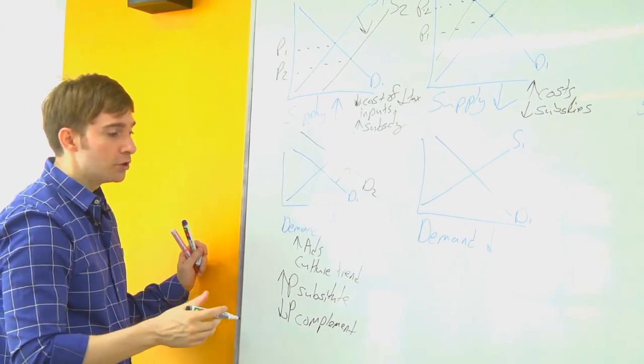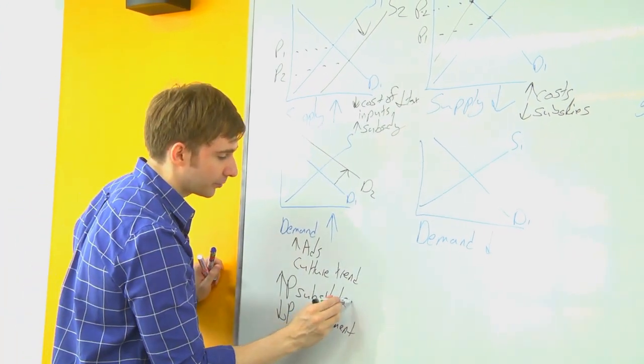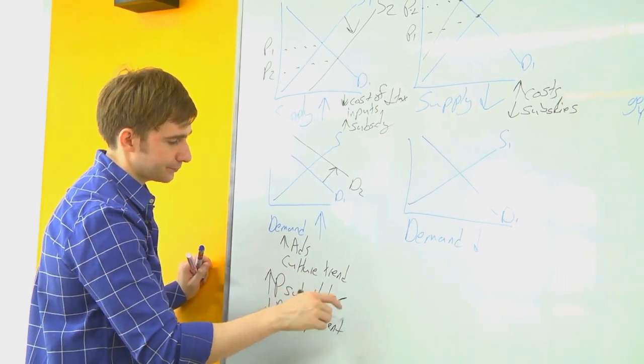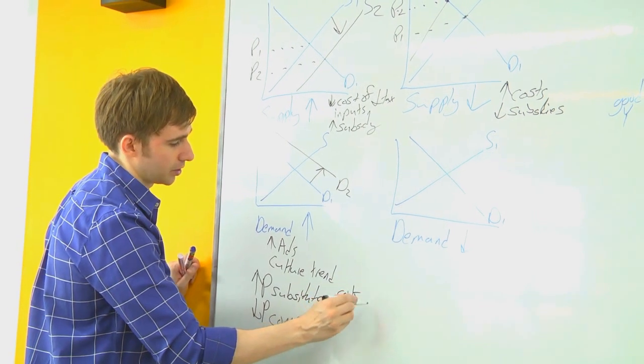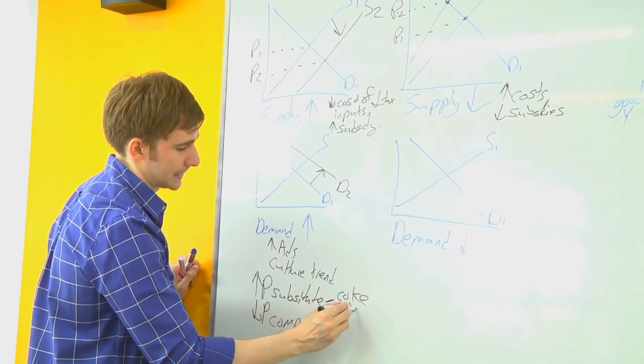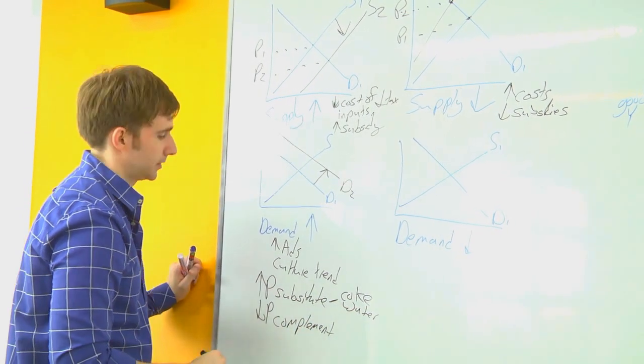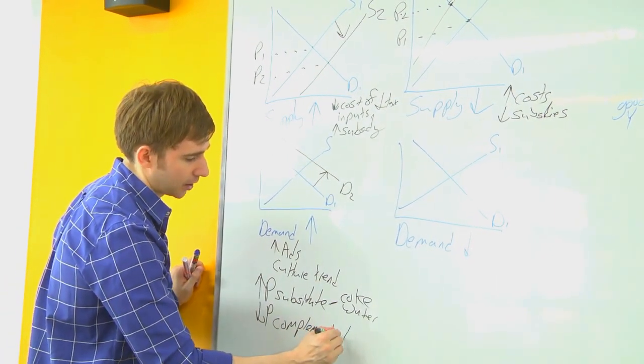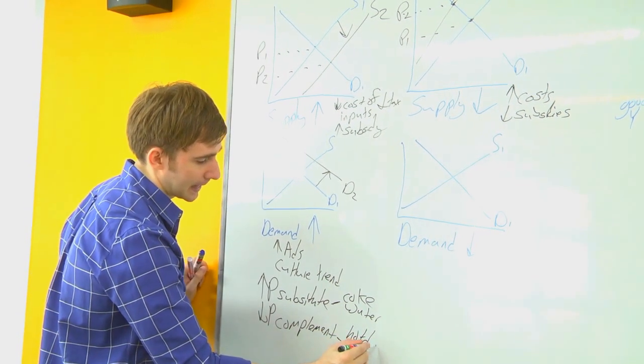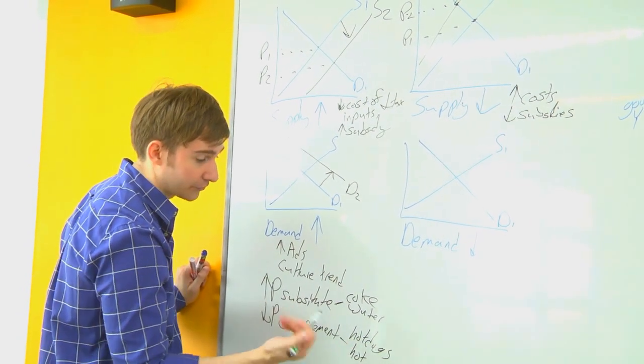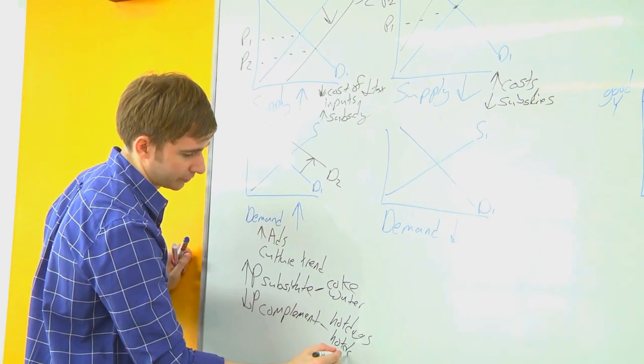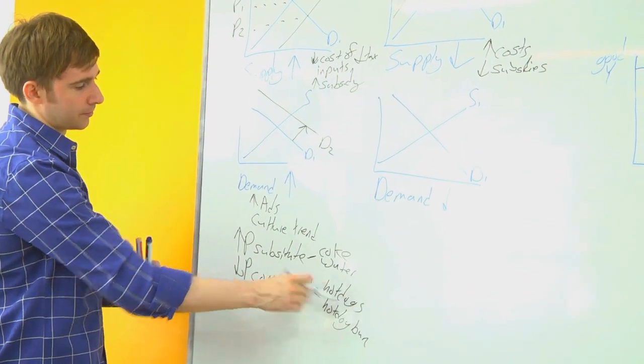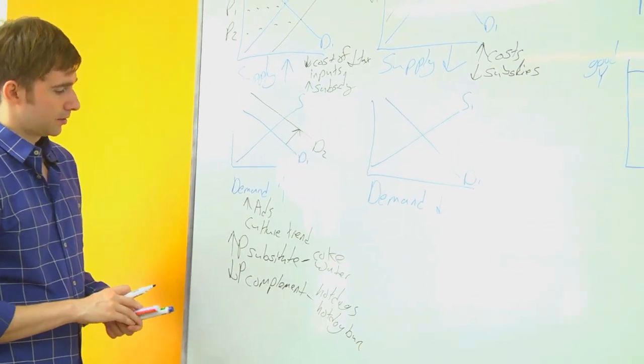So just a quick review. An example of a substitute might be Coke and water. Complements are two things you buy together, like hot dogs and hot dog buns, or peanut butter and bread. Those are complements.